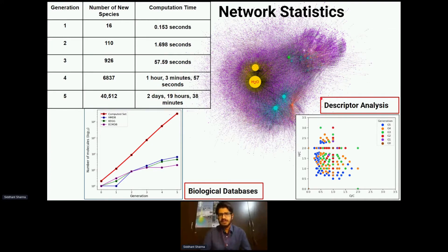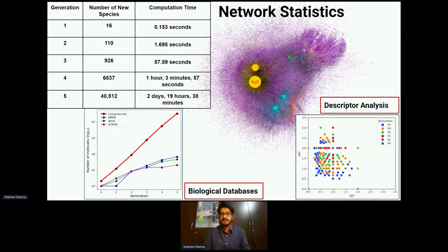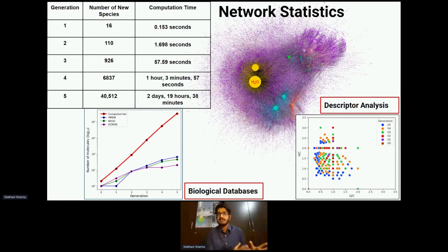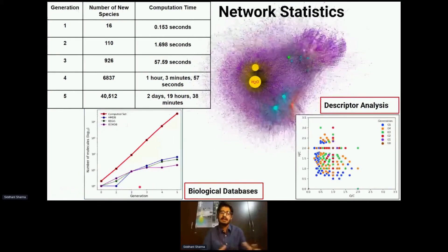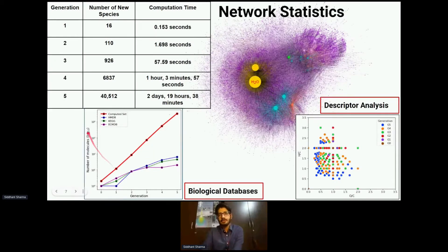We did some basic descriptor analysis to provide network analysis — computing physicochemical properties of the molecules we're getting, such as solubilities, partition coefficients, and how these molecules behave in phase-separated systems. We also compared to biological databases such as KEGG. We acknowledge KEGG is not a prebiotic database, which is a problem in prebiotic chemistry — we don't have specific databases for prebiotic chemical reactions. Our computed set had many structures not matched in KEGG, the human metabolome database, or equal metabolism database, suggesting a lot of chemical diversity waiting to be explored.